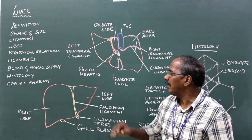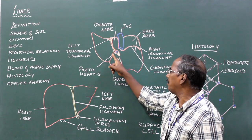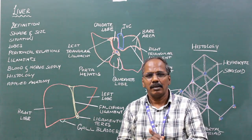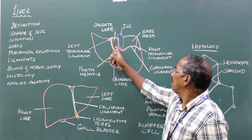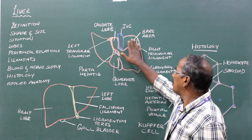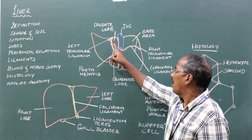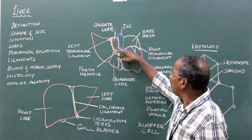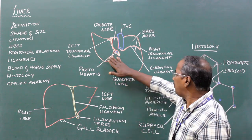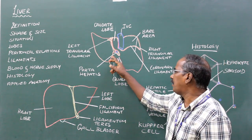Anteriorly separated by the falciform ligament into right lobe and left lobe, and separated on the posterior aspect by the fissure for ligamentum venosum and the fissure for ligamentum teres. The right lobe in addition has two lobes: caudate lobe and quadrate lobe. The caudate lobe is present on the posterior surface of the liver between the groove for the inferior vena cava and the fissure for ligamentum venosum, and above the porta hepatis. The quadrate lobe is present on the inferior surface of the liver between the fossa for the gallbladder and the fissure for ligamentum teres.